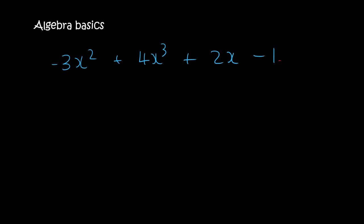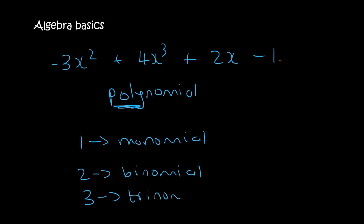Here we have something that has 4 terms. So if it has more than 3 terms, then just call it a polynomial. Poly means many. So if it was 1 term, remember that's a monomial. 2 is a binomial, and 3 is a trinomial. If we go further than that, then we just call it a polynomial, because poly means many.